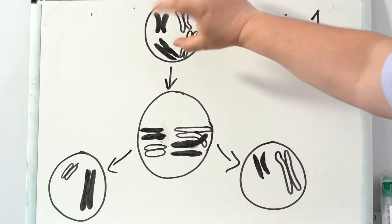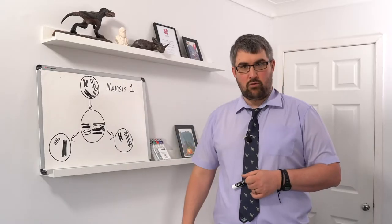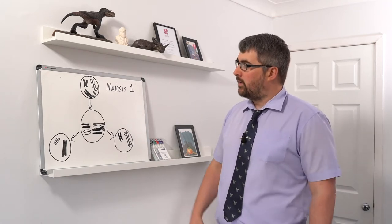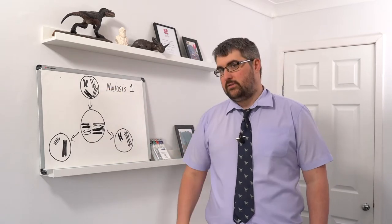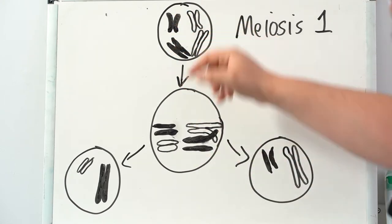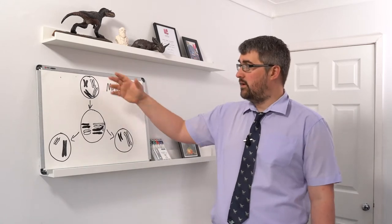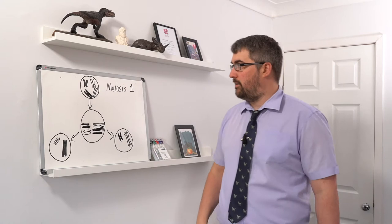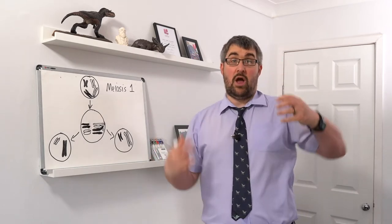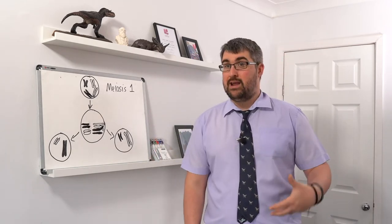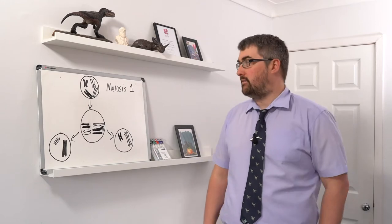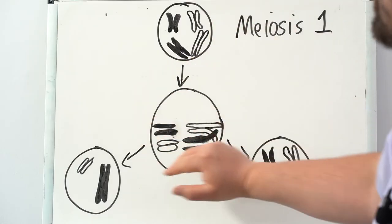In humans we have 23 types of chromosomes, two of each — like having two sets of encyclopedias. The most important part of meiosis I is what happens in metaphase I. Here, instead of chromosomes lining up individually along the equator as in mitosis, they pair up to form bivalents or homologous pairs. This is where genetic variation starts to be introduced.